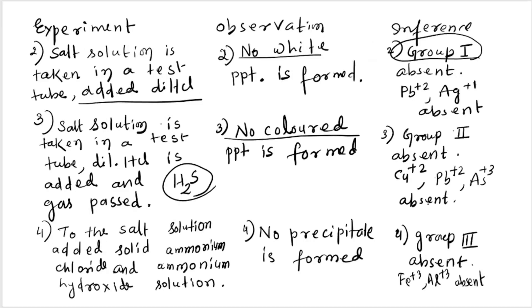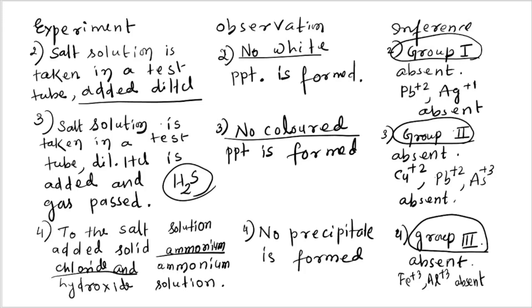We proceed to group three. Ammonium chloride and ammonium hydroxide are added to the salt solution as a saturated solution. No precipitate is obtained, meaning Fe³⁺ and Al³⁺ are absent — group three is absent.